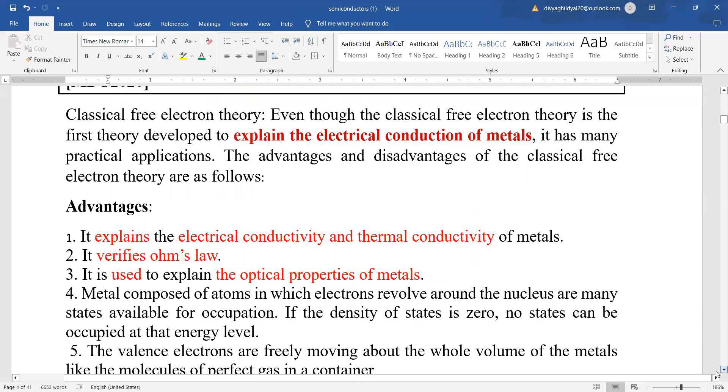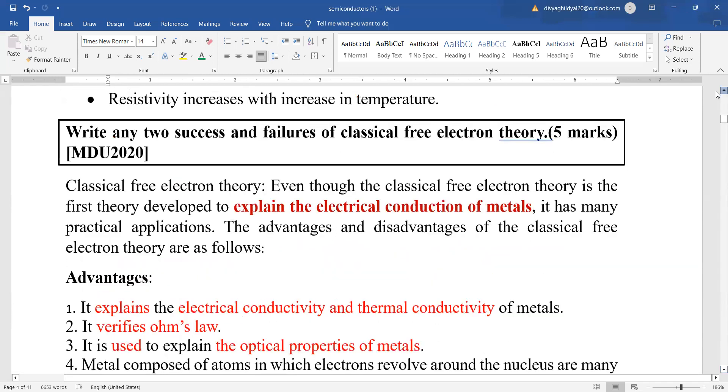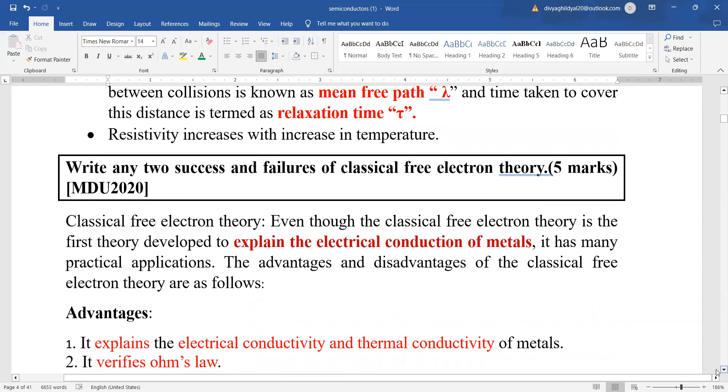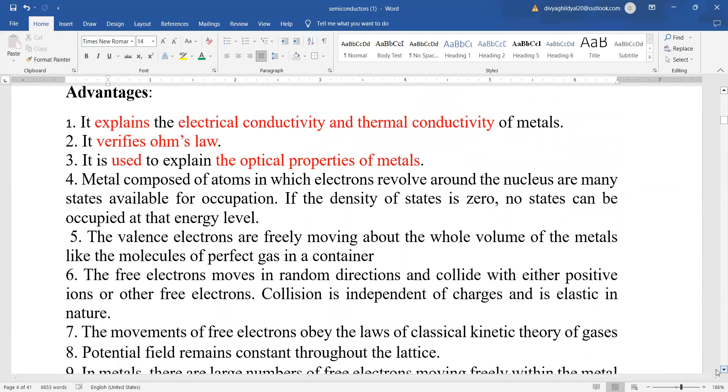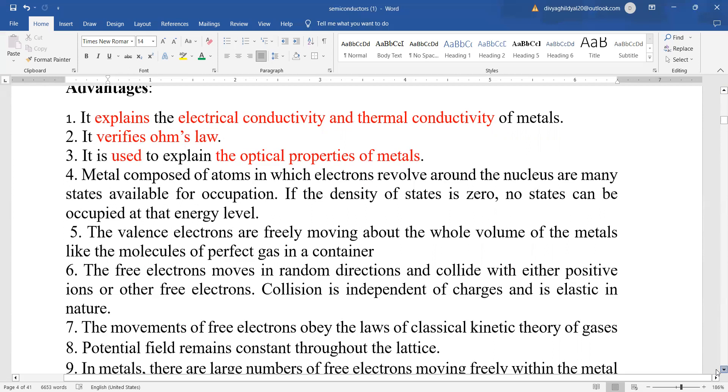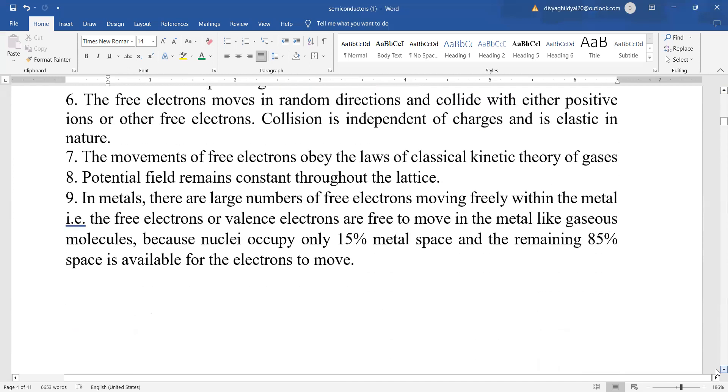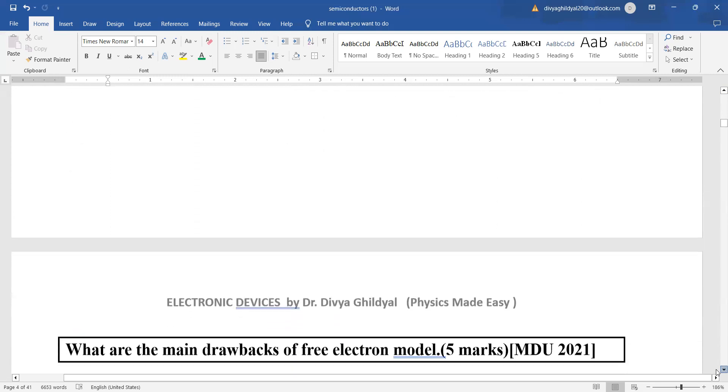What are the success and failure of this theory? The biggest advantage: this theory has been used to explain the electrical conduction of metals. The basic advantage is that this theory explains the electrical conductivity and thermal conductivity of metals very successfully. It verifies Ohm's law. It is used to explain the optical properties of metals. The valence electrons are freely moving about the whole volume of metals like the molecules of a perfect gas, and the movement of free electrons obeys the laws of classical kinetic theory of gases.